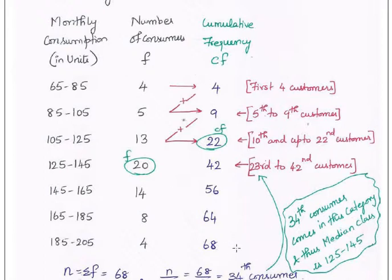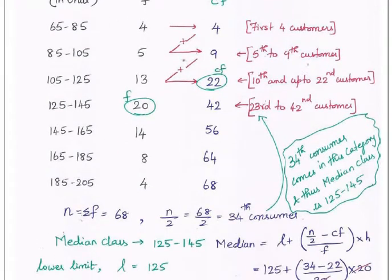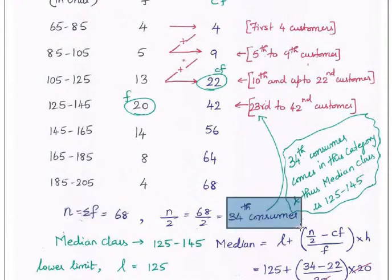In the cumulative frequency table, you then have to find the median class. How do you identify the median class? You have sigma F totalling 68. As per the question, n by 2 becomes 68 by 2, which is 34. So the middle value is the 34th customer, who becomes the middle person. Median is the middle value, so we check which category the 34th customer falls in.